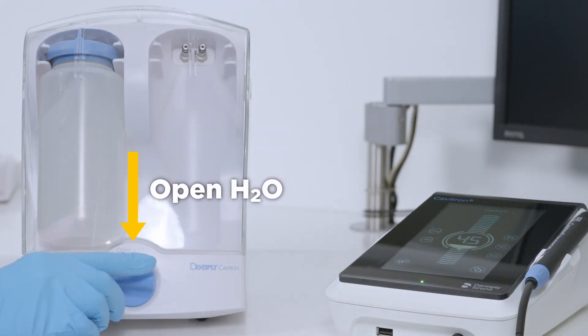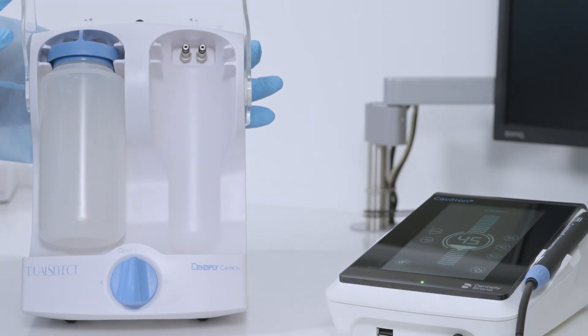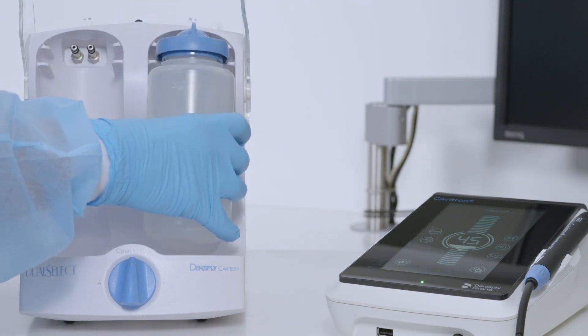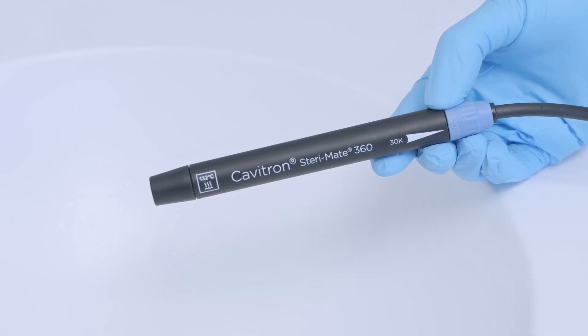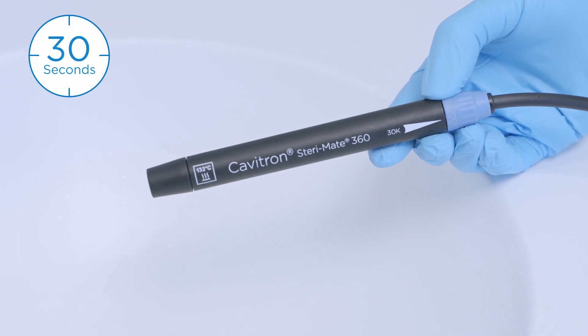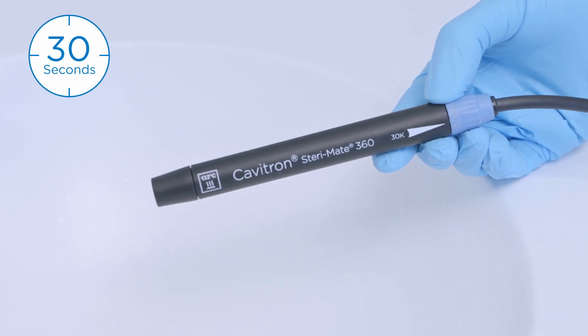Set the selector knob to open H2O position. Open the shield and remove the empty bottle from position A and place it in position B. Operate your Cavitron system at maximum water flow for at least 30 seconds to air purge the line dry.